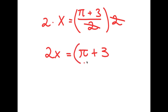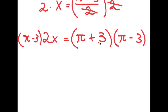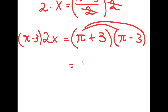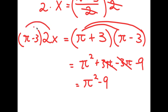From here, I'm going to multiply both sides by pi minus 3. So I have (pi minus 3) times 2x is equal to (pi plus 3) times (pi minus 3). Expanding the right side: pi squared plus 3pi minus 3pi, which cancel out, minus 9 — so this is pi squared minus 9. For the left-hand side, distributing 2x gives 2x·pi minus 6x.